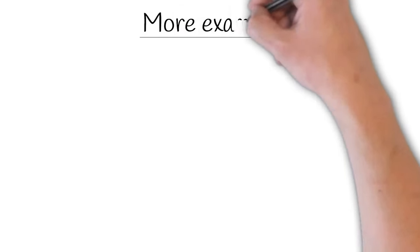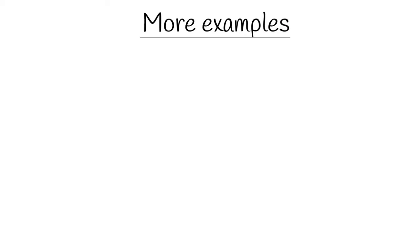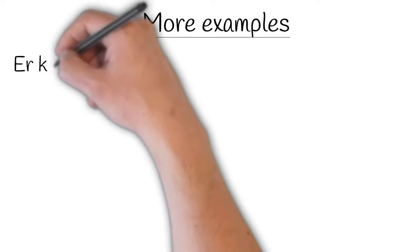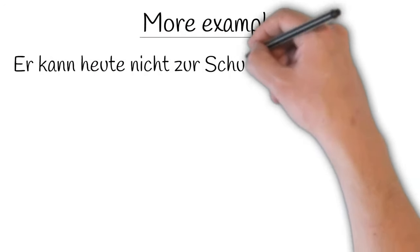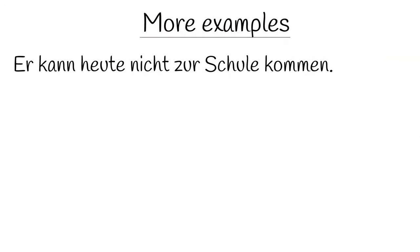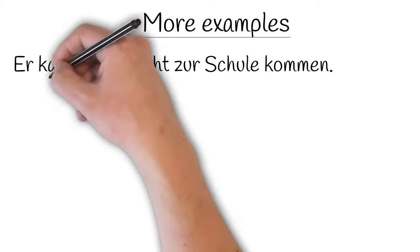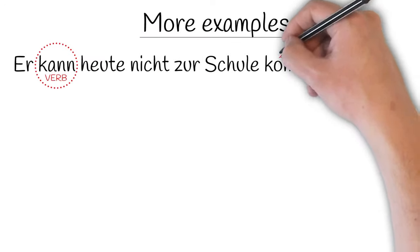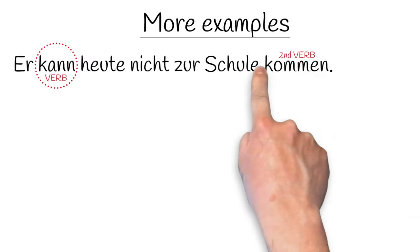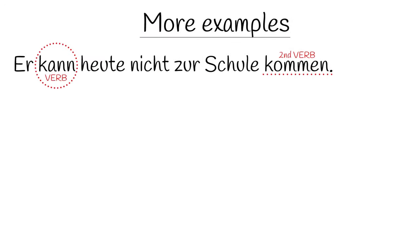Let's look at some more examples which use all types of German verbs. Our first example: 'Er kann heute nicht zur Schule kommen' — he can't come to school today. Our first verb, 'kann,' is in the second position after the subject, and our second verb, 'kommen,' comes right at the end of the sentence.